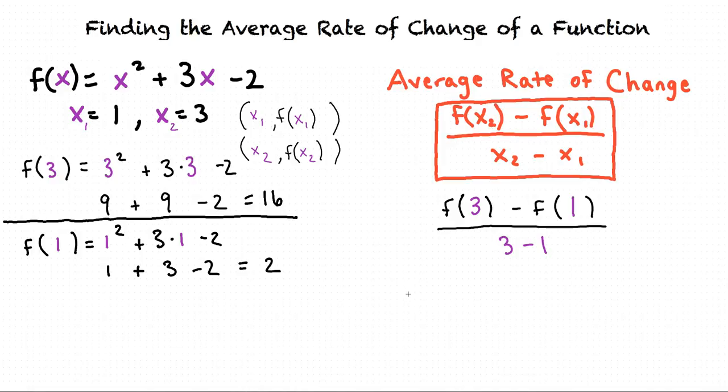Now we can plug in the values we found into the average rate of change formula. Recall our formula: f of 3 minus f of 1 divided by 3 minus 1. We found that f of 3 equals 16 and f of 1 equals 2 divided by 3 minus 1.